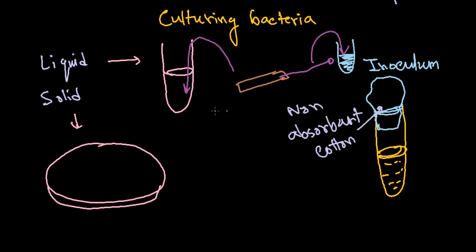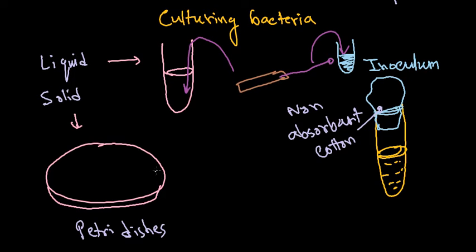Before doing anything, every single task requires that all media and glassware be sterilized. For petri dishes, we can use glass petri dishes that need to be sterilized before use, or we can use brand new disposable petri plates which do not require sterilization. In the petri plate, it is filled with agar and the solid matrix is formed.